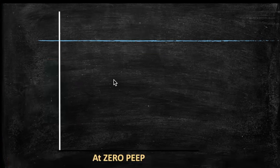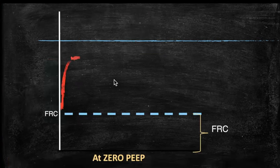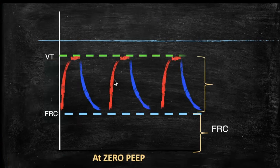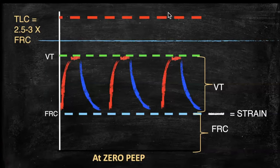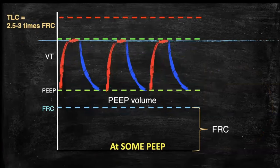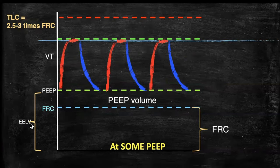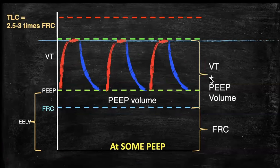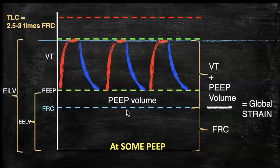At zero PEEP we have a certain FRC. Ventilating at a certain tidal volume gives us VT/FRC as strain. Total lung capacity is roughly 2.5 to 3 times FRC. When positive end-expiratory pressure is applied, we introduce a PEEP volume; end-expiratory lung volume becomes FRC plus PEEP volume, and global strain becomes (VT + PEEP volume) / FRC. End-inspiratory lung volume is positioned within the lung capacity range.